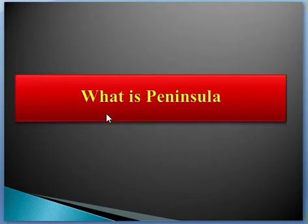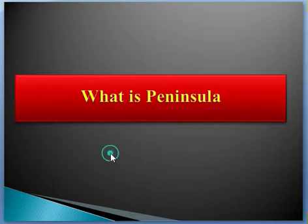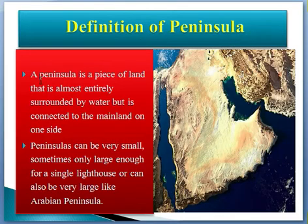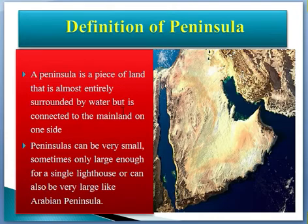Hello, so today I would like to talk about what is a peninsula. Here is the definition: a peninsula is a piece of land that is almost entirely surrounded by water, but it's connected to the mainland on one side.